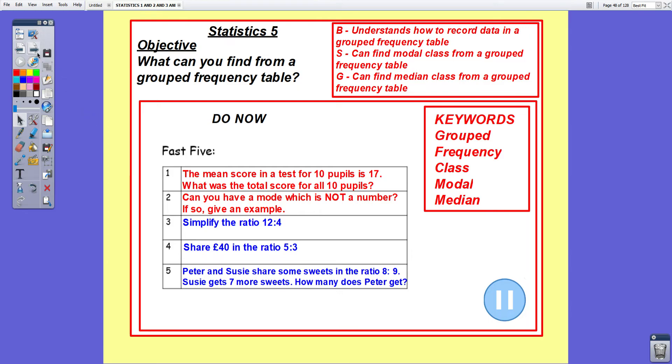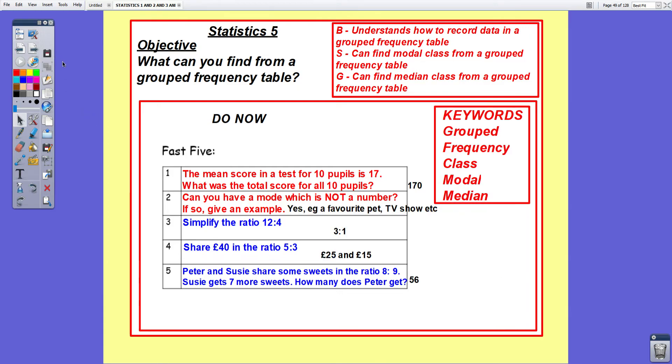Okay let's have a look at the answers. Question one: the mean score in a test for 10 pupils is 17. What was the total score for all 10 pupils? Remembering that the mean is the total divided by the number of pupils, so the total divided by 10 is 17 means that the total must be 17 times 10, which is 170.